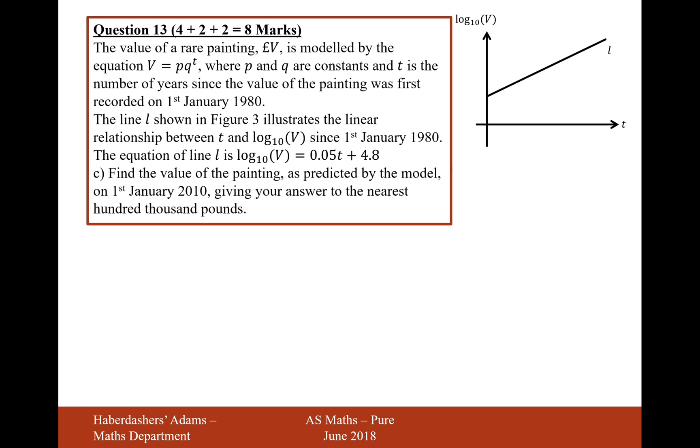Let's now move on to part C. Find the value of the painting as predicted by the model on the 1st of Jan 2010, giving your answer to the nearest 100,000. That's going to be 30 years on from then, so T equals 30. Let's do the multiplication: 63,100 multiplied by 1.1220 to the power of 30. Let's do that calculation now on the calculator.